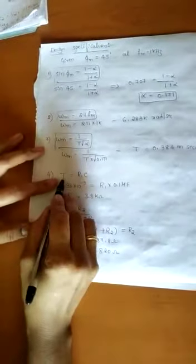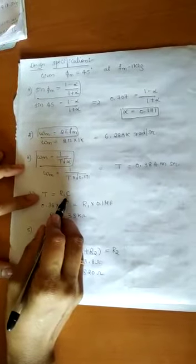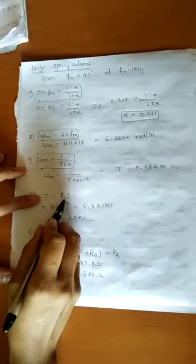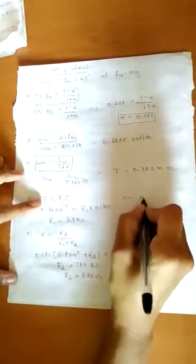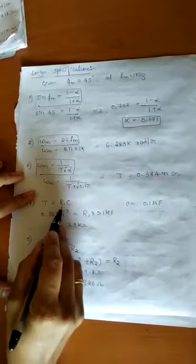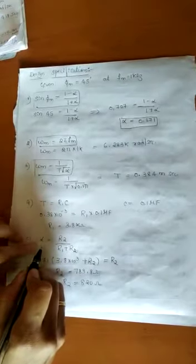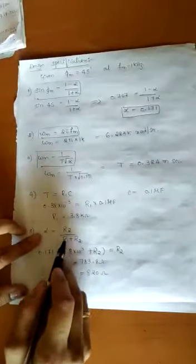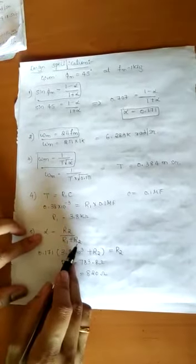Substituting the value of T, since T = R1·C and assuming C = 0.1 µF, the only unknown is R1. Solving gives R1 = 3.8 kΩ. Similarly, since α = R2/(R1 + R2), solving for R2 gives 820 Ω. In the lab, the standard resistor near 3.8 kΩ is 3.9 kΩ, so R1 = 3.9 kΩ and R2 = 820 Ω.